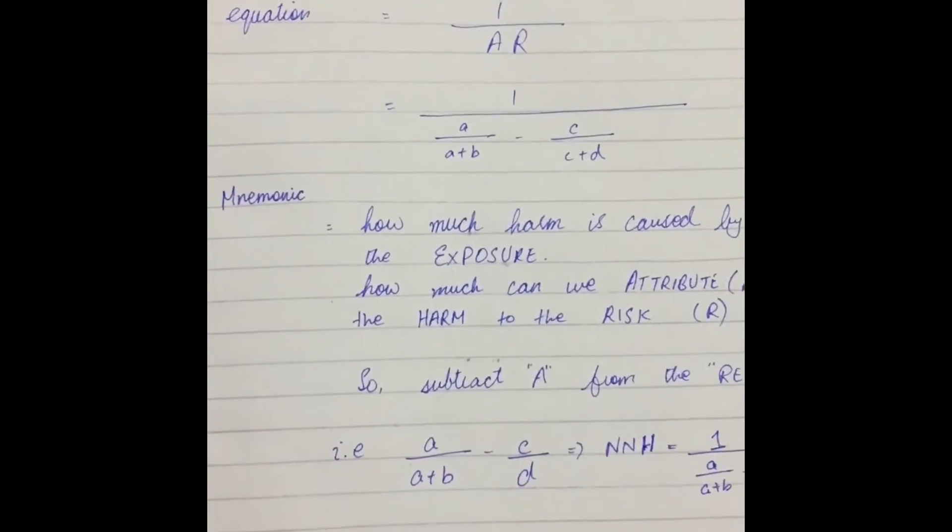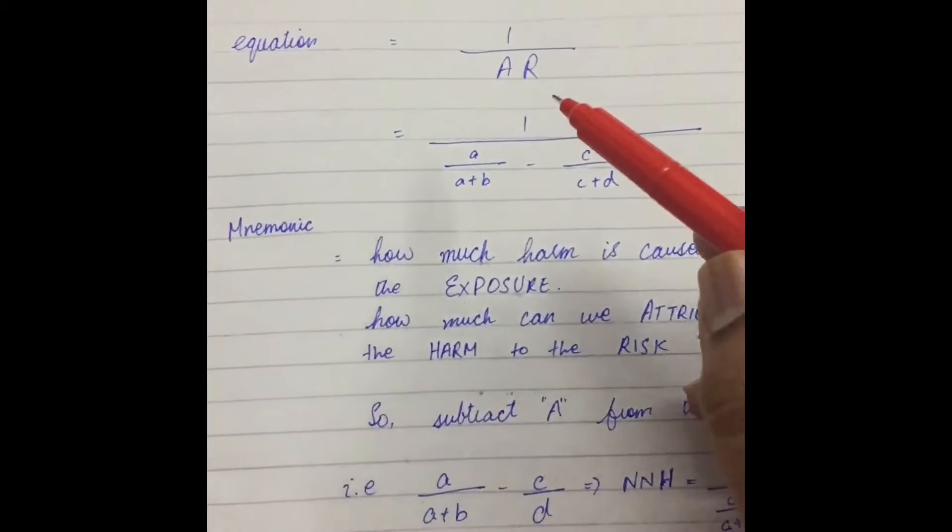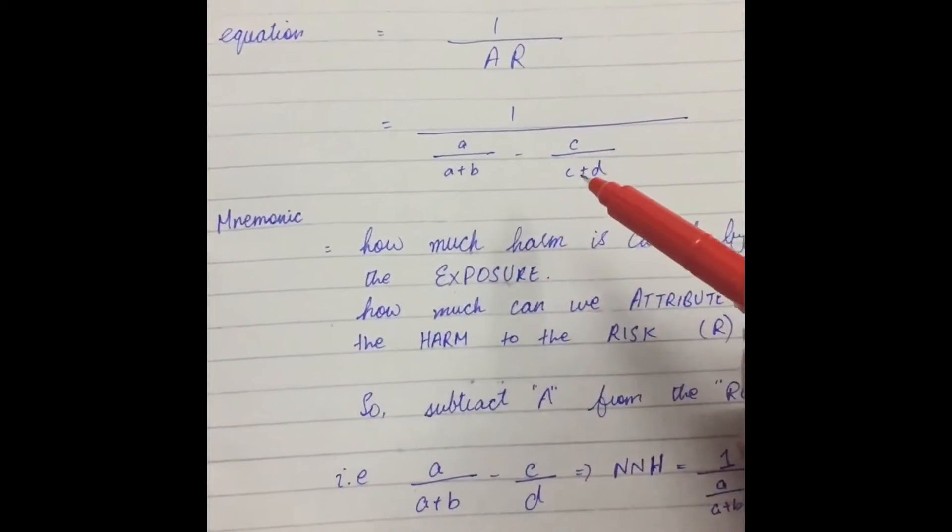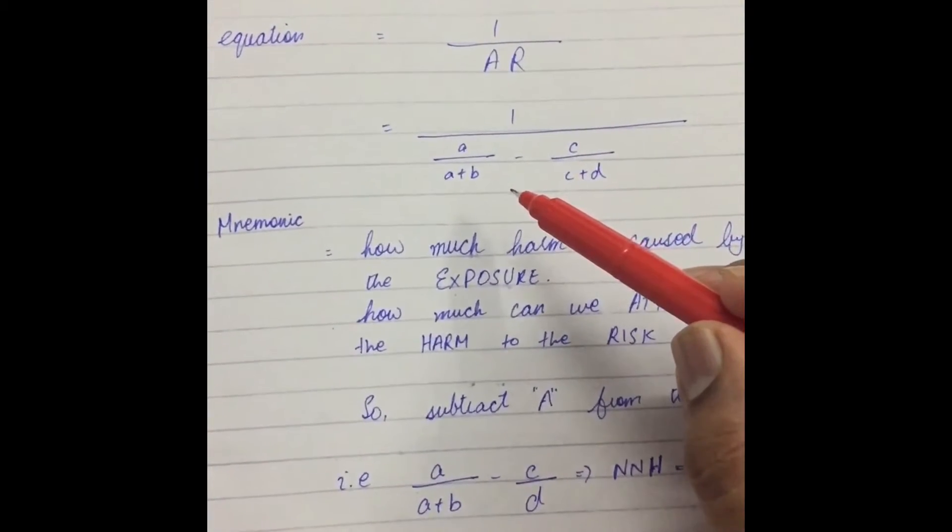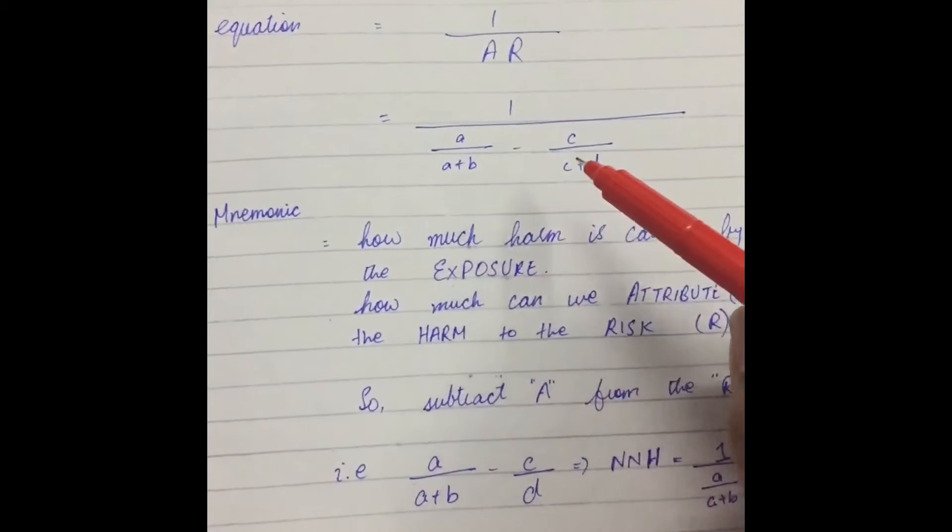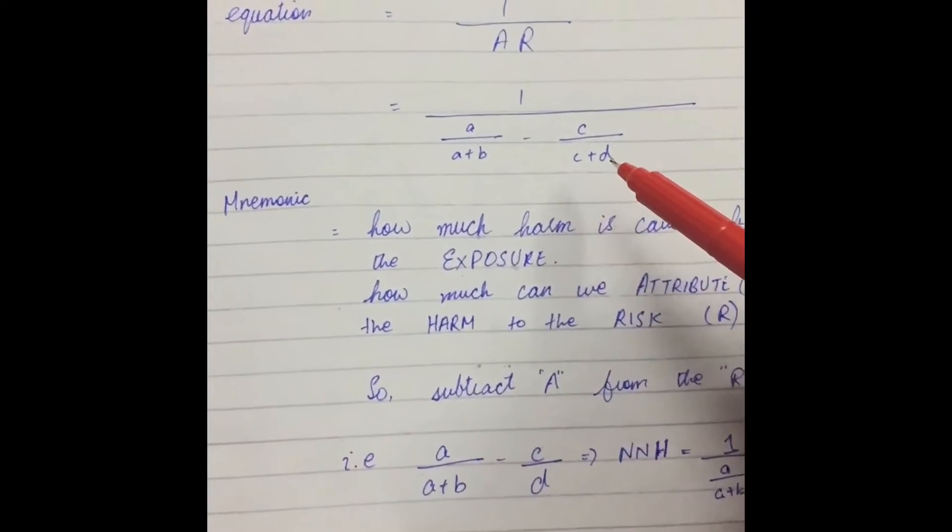And finally, the last thing is number needed to harm. Its equation is 1, or attributable risk, or 1, or A, or A plus B, minus C, or C plus D.